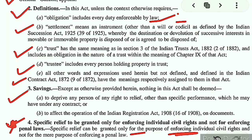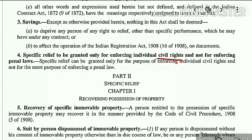This was Part 1 — the Preliminary — covering Sections 1 to 4 of the SRA. Now let us start with our very first relief, which is recovering the possession of property — Chapter 1. The word 'property' here includes both immovable property and movable property. Sections 5 and 6 deal with recovering the possession of immovable property, and Sections 7 and 8 deal with recovering possession of movable property. Immovable property has the same meaning as under the Transfer of Property Act or the Registration Act: it includes land, benefits arising out of land, things attached to earth, and things permanently fastened to what is attached to the earth.